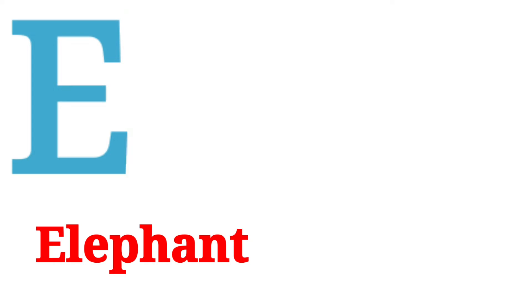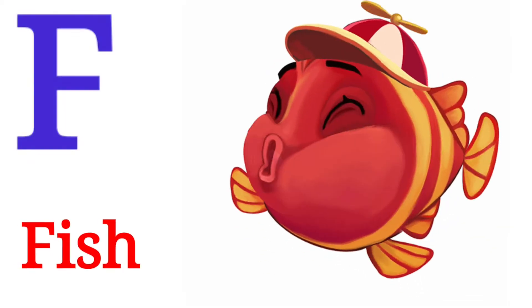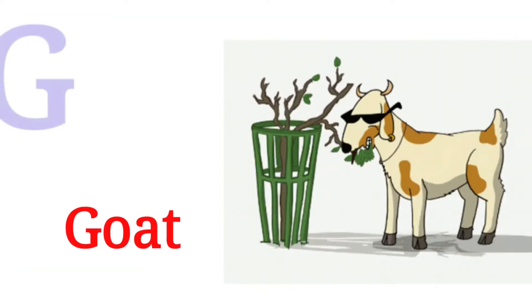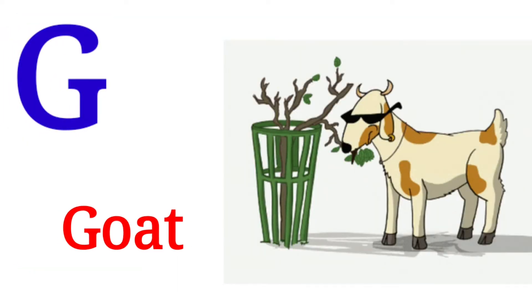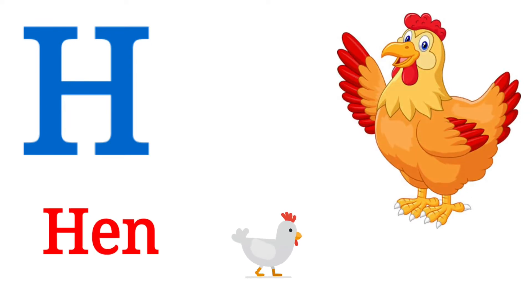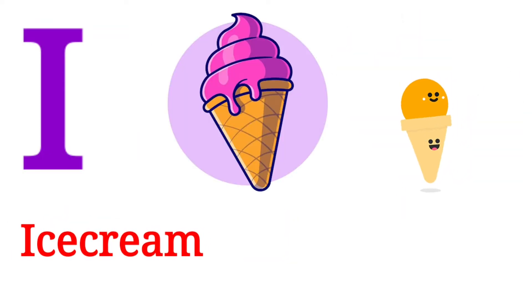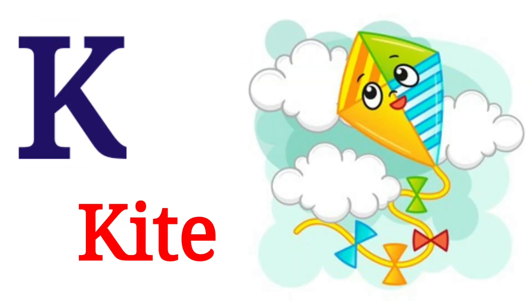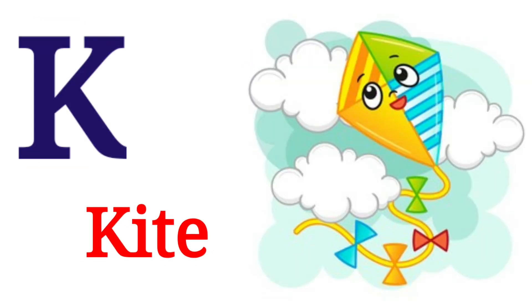F for fish, G for goat, H for hen, I for ice cream, J for jug, K for kite.